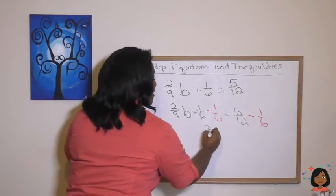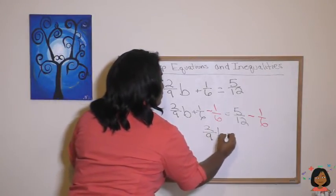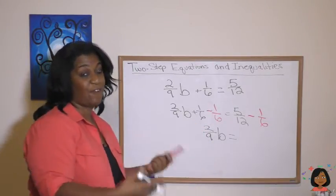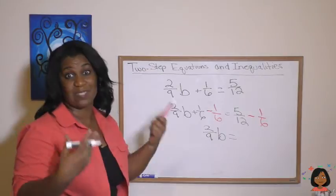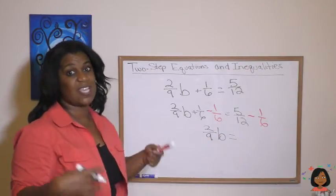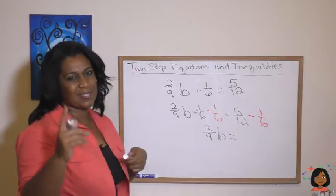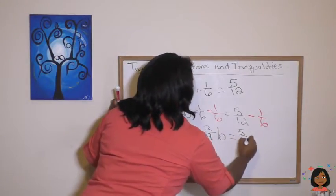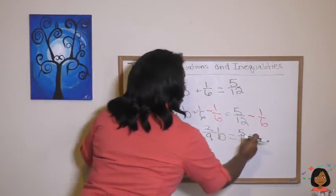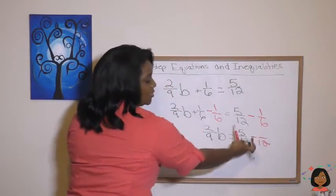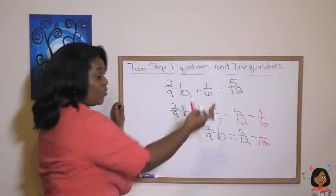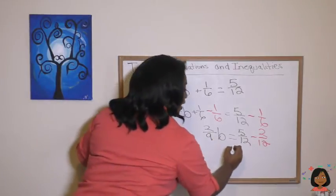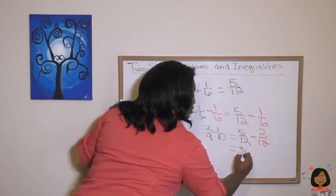Here we go in red. Here's our minus 1 sixth and equals 5 twelfths minus 1 sixth. Let's keep it going. This side simplifies down to 2 ninths b. Now this side, we have 5 twelfths minus 1 sixths and we know when we're subtracting fractions, they have to have the same denominator. So we're going to need to convert our 1 sixth to 12ths. Now the good news is, I know you're smart. You can do this in your head. Watch. 5 twelfths is going to equal 6 times 2 is 12 and then 1 times 2 is 2. So it's going to equal 2 twelfths, which on this side, that whole thing is equal to 3 twelfths.